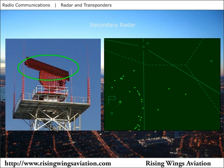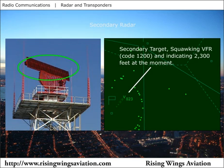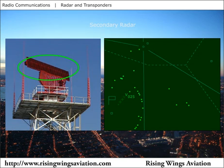Secondary radar operates by communicating with transmitter receivers on board airplanes called transponders. The secondary radar antenna usually rides on top of the primary radar antenna, the two sweeping together in a circle. As the antenna turns, the secondary radar component, called the interrogator, sends out radio interrogations.